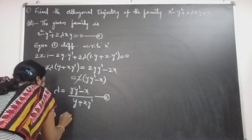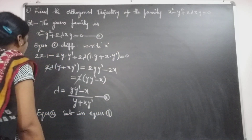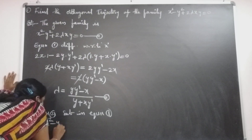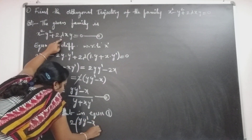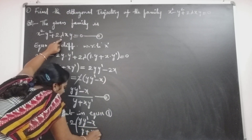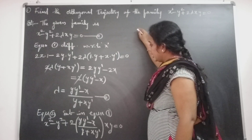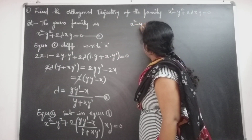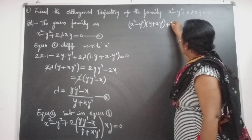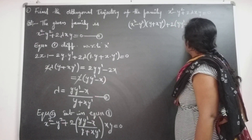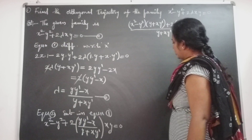Substitute the value of λ from equation 2 into equation 1. Equation 1 becomes: x² - y² + 2·[(yy' - x)/(y + xy')]·xy = 0. Taking LCM, this becomes: (x² - y²)(y + xy') + 2xy(yy' - x), all over (y + xy'), equals 0.